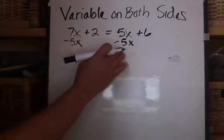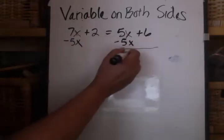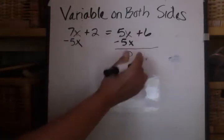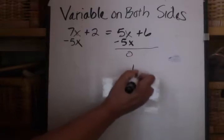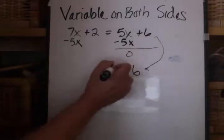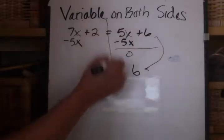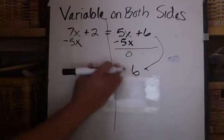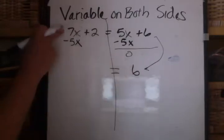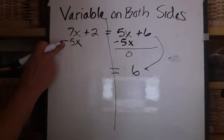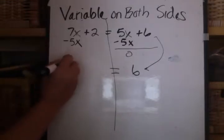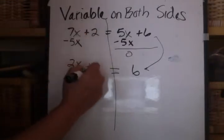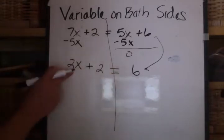So when I subtract 5x here, I get a 0. I still have a 6 here on this side of the equation. Let's bring that down. Equals 6. Here's my line. And then on this side, I have 7x minus 5x, which will equal 2x. And I just bring down this plus 2. Okay? So now this is what my equation looks like.